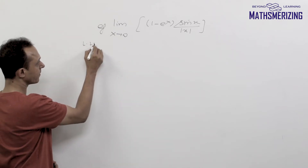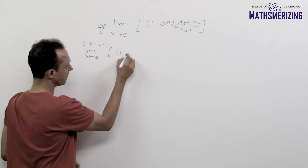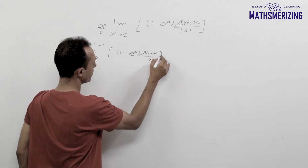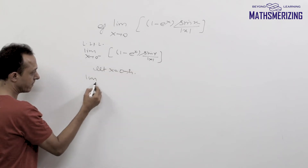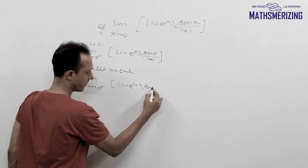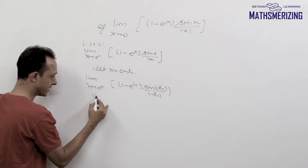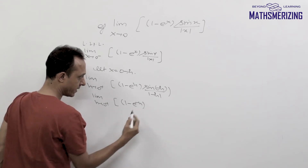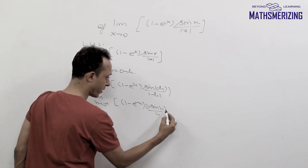So what I'll do is write the left-hand limit. The left-hand limit is: limit x tends to 0 negative, greatest integer function of (1 minus e to the power x) times sin x upon mod x. I'll let x equals 0 minus h, so it becomes limit h tends to 0 positive, of the greatest integer function of (1 minus e to the power minus h) times minus sin h upon h.